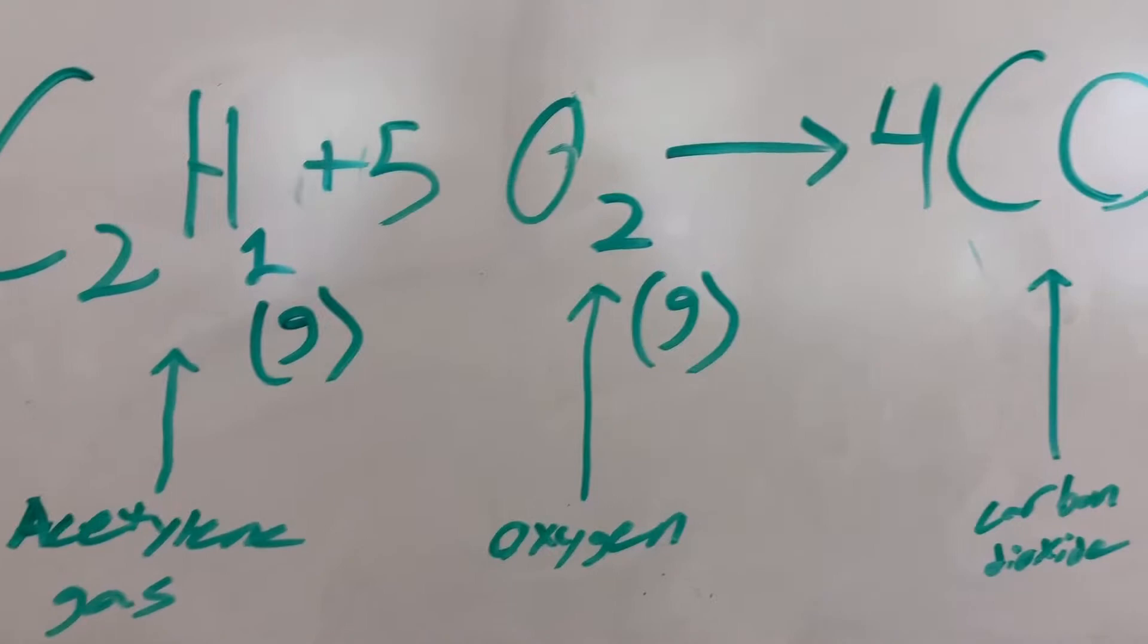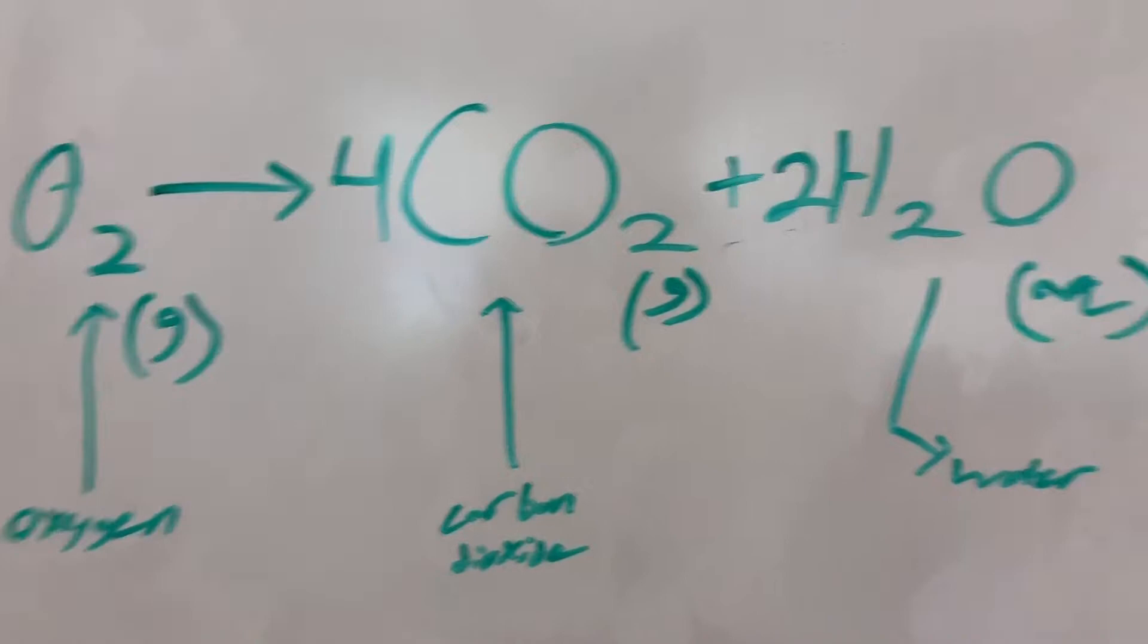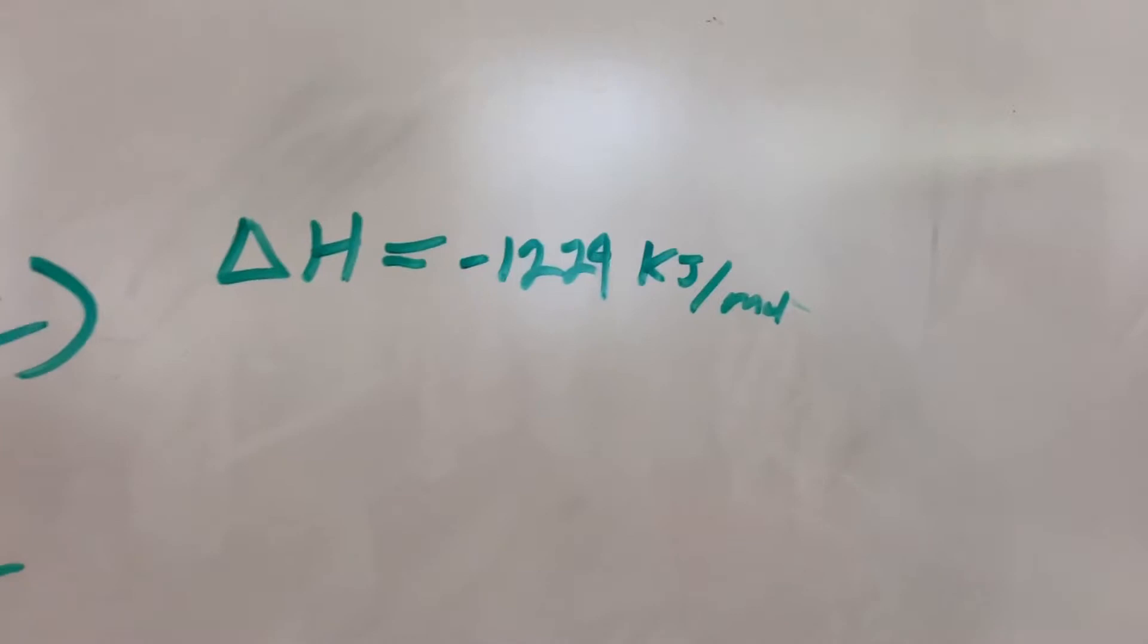The combustion of acetylene gas includes two acetylene gas molecules, five oxygen molecules, which yields four carbon dioxide molecules, and two water molecules. The enthalpy of the reaction is negative 1,229 kilojoules per mole.